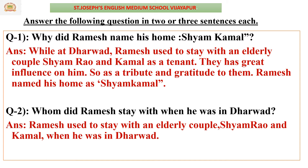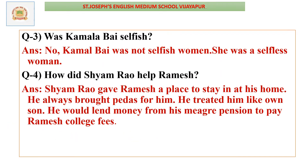Question number two: Whom did Ramesh stay with when he was in Dharwar? Ramesh used to stay with an elderly couple, Sham Rao and Kamla, when he was in Dharwar.